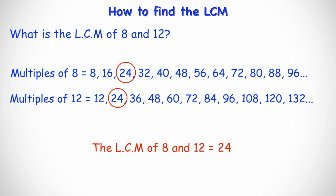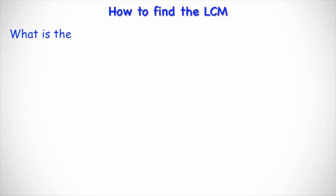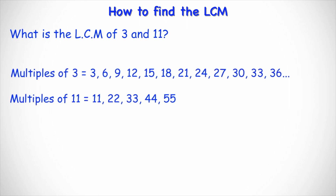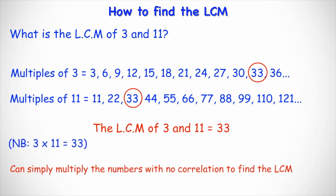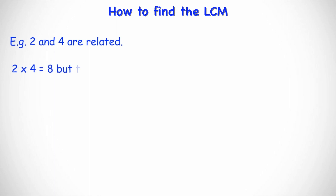Note that 8 and 12 are connected as they are both even numbers and both appear in the four times table. But when numbers clearly have no correlation, for example two different prime numbers, to find the LCM you simply multiply them. For instance, the LCM of 3 and 11: both are prime numbers — they can't be divided by any number except themselves and 1 — so 3 times 11 is 33, which is also the LCM. However, this shortcut doesn't work for numbers that do have a connection. For example, 2 multiplied by 4 is 8, but the LCM of 2 and 4 is 4, not 8.